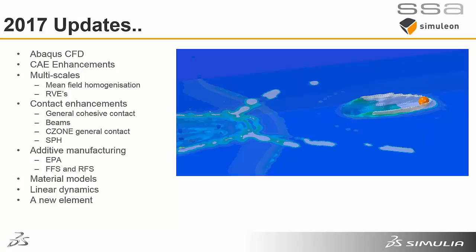One of those themes is definitely multi-scale modeling. We'll look at some stuff to do with contacts — Abacus is all about contacts — and we'll look at what they've been working on in 2016 to enhance the offering in that direction. The ability of Abacus to do additive manufacturing has been highlighted quite a lot recently. 2017 is the first release where Abacus users get their hands on additive manufacturing processes and software. Then a little bit on material models, some new material models that have been developed and released, something on linear dynamics, and a new element added to the extensive family of Abacus elements.